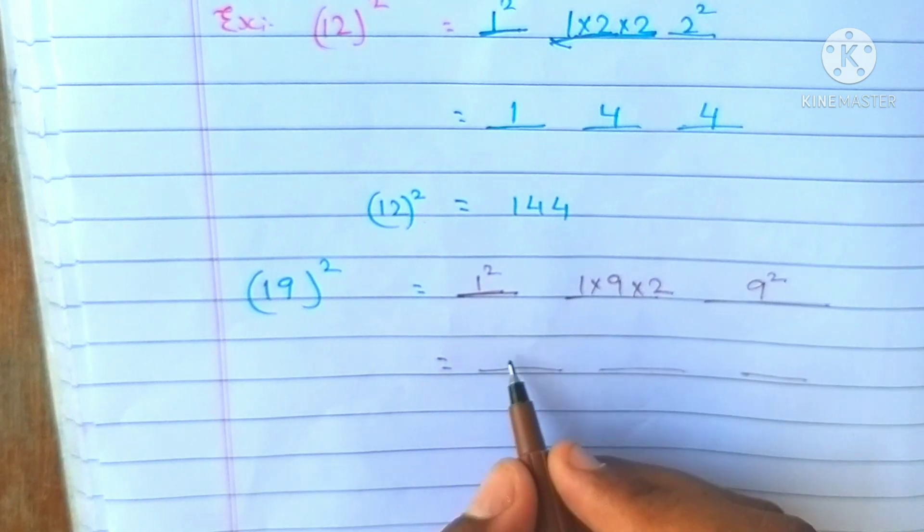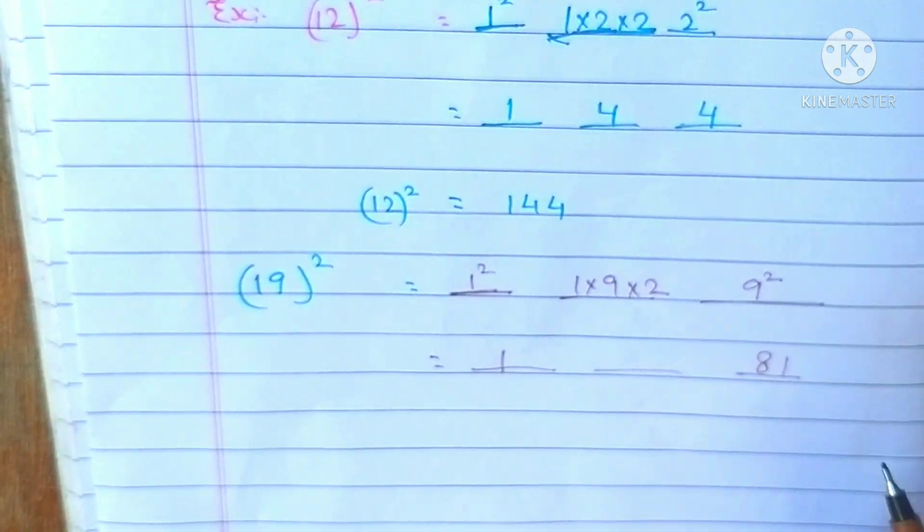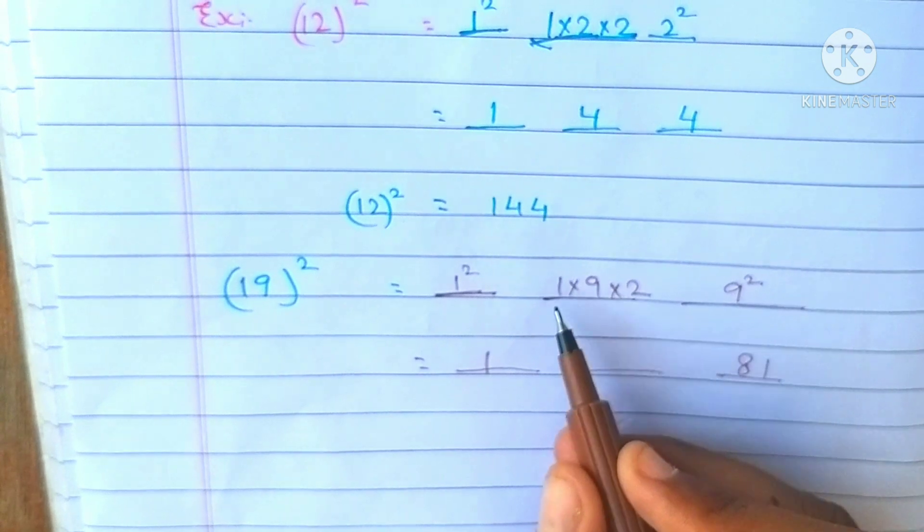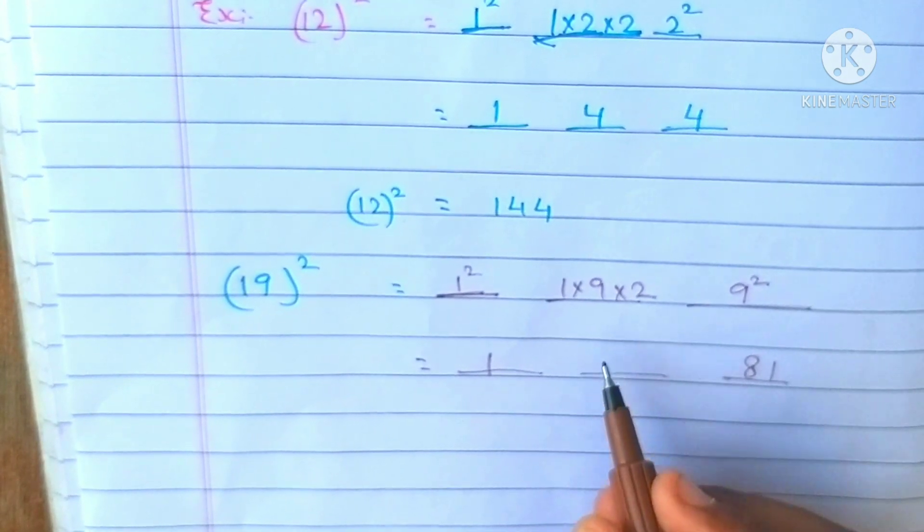1 square is 1. 9 square is 81. 1 into 9 is 9, and 9 twos are 18.